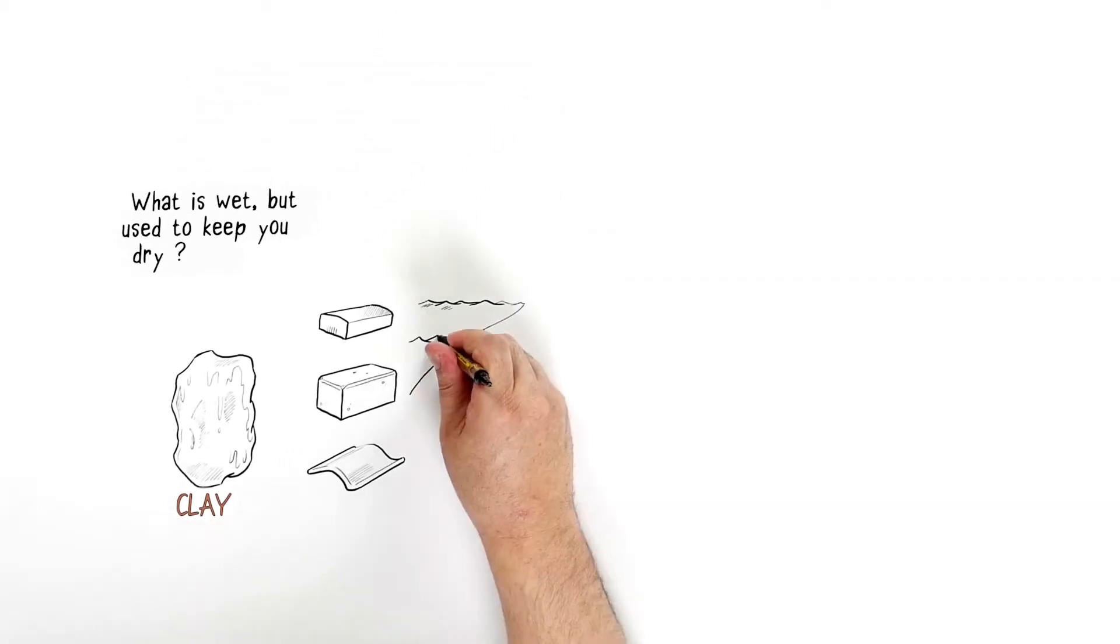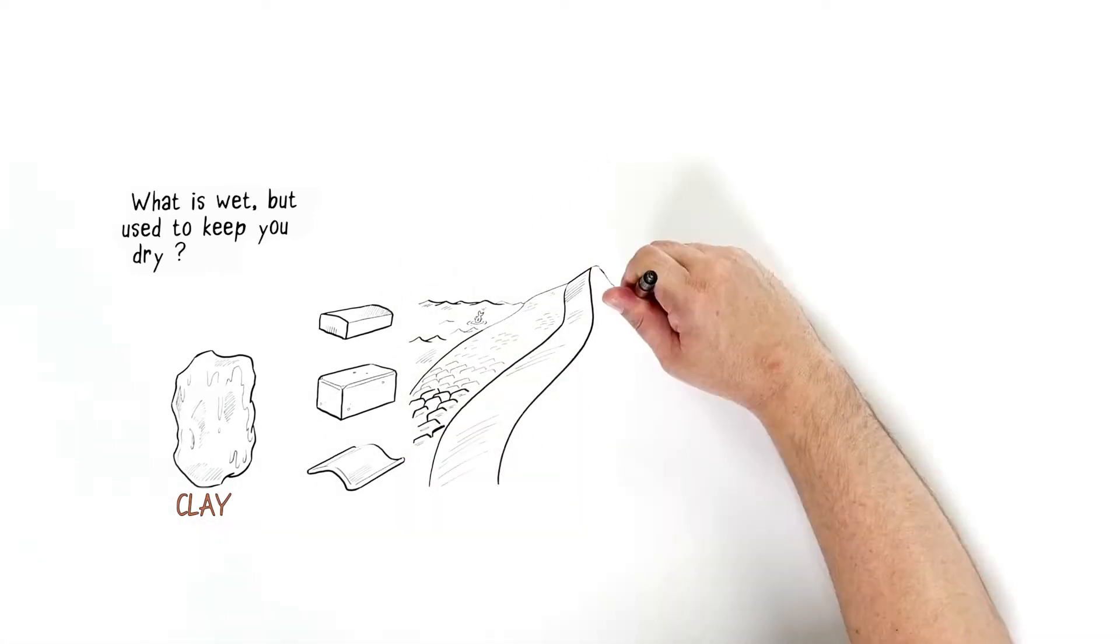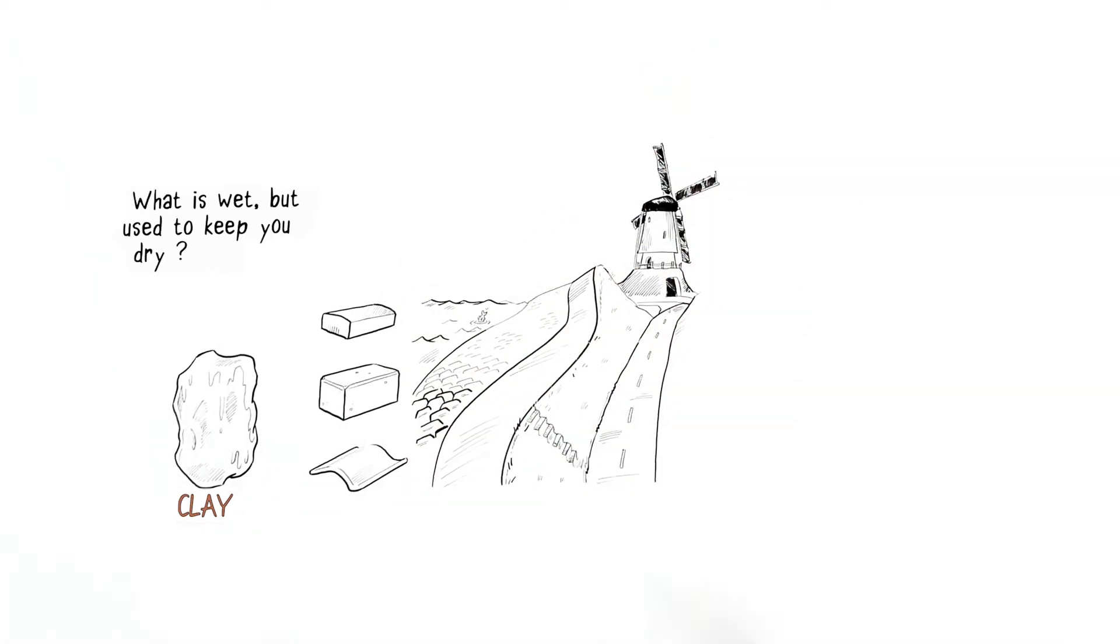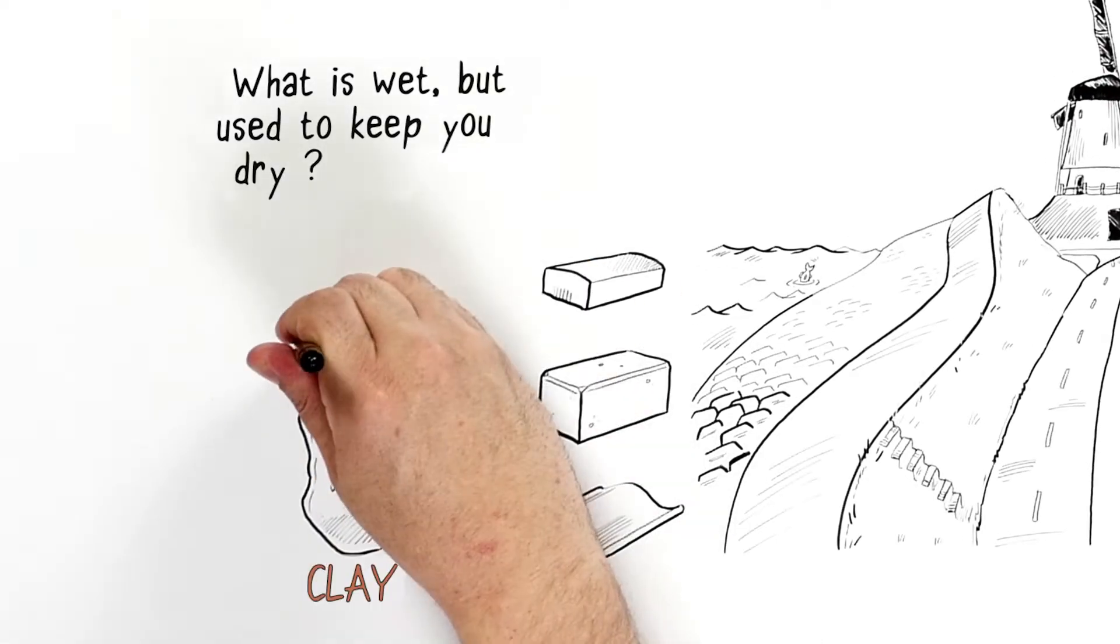Clay is used as raw material for bricks, pavers and ceramic roofing tiles, but also for building and raising our dikes. It's one of the most important resources.